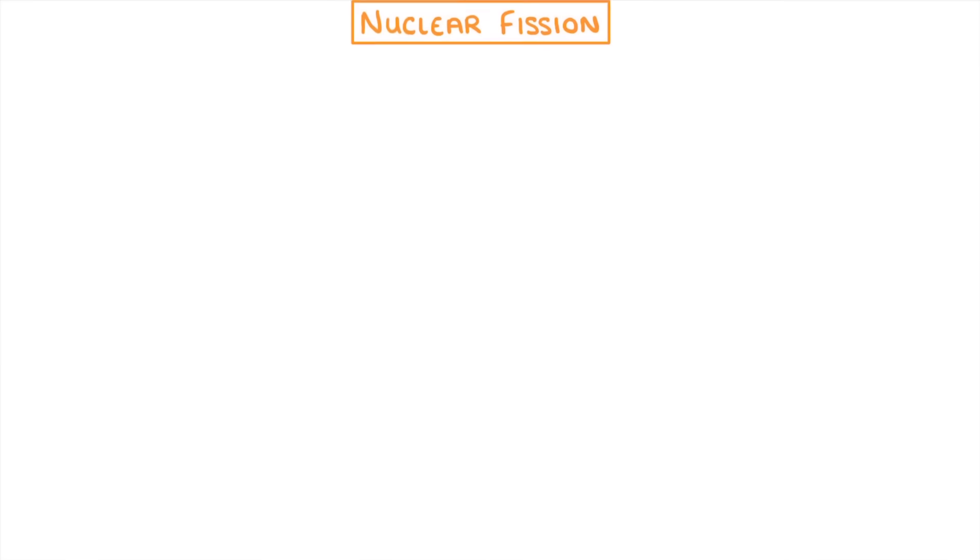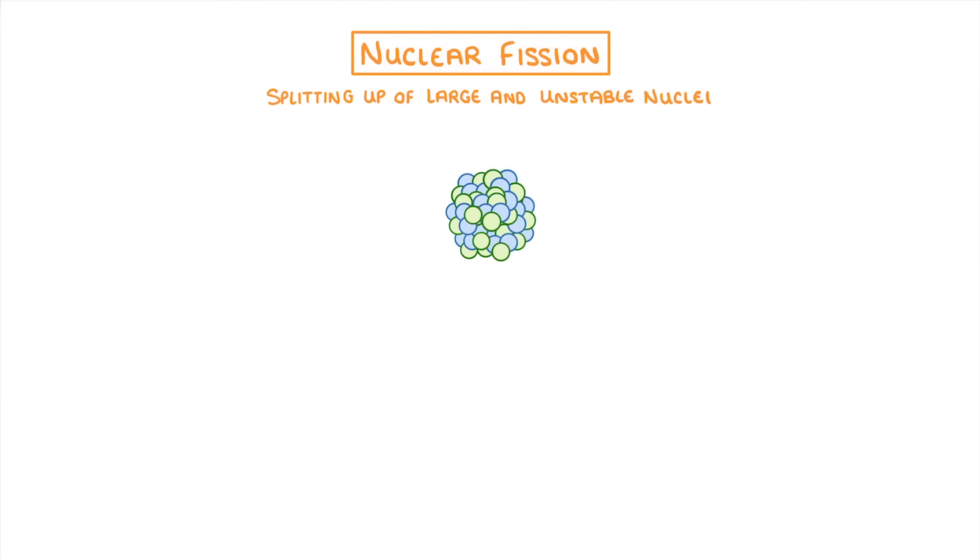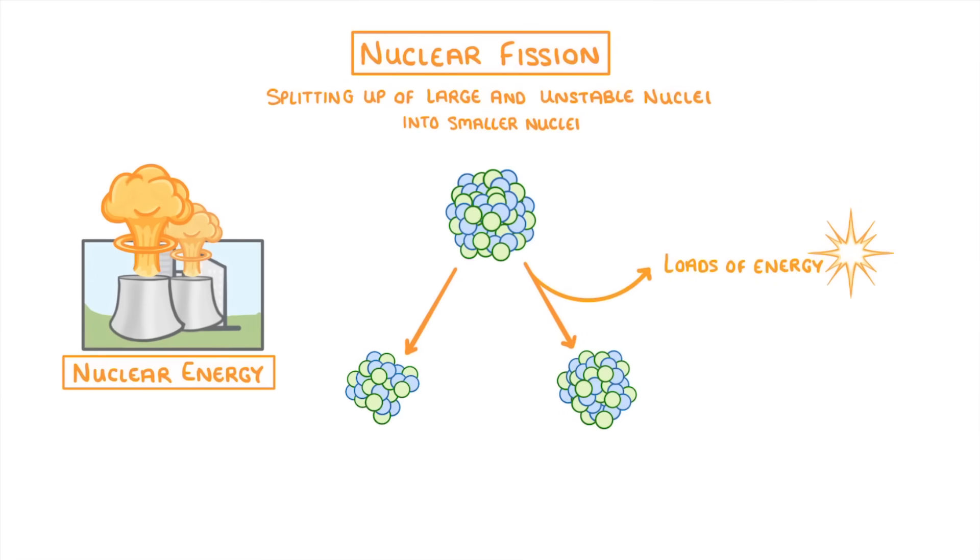In today's video, we're looking at nuclear fission, which is the splitting up of a large and unstable nuclei into smaller nuclei. At the same time, it releases loads of energy, which is how we get all of our nuclear energy here on Earth.